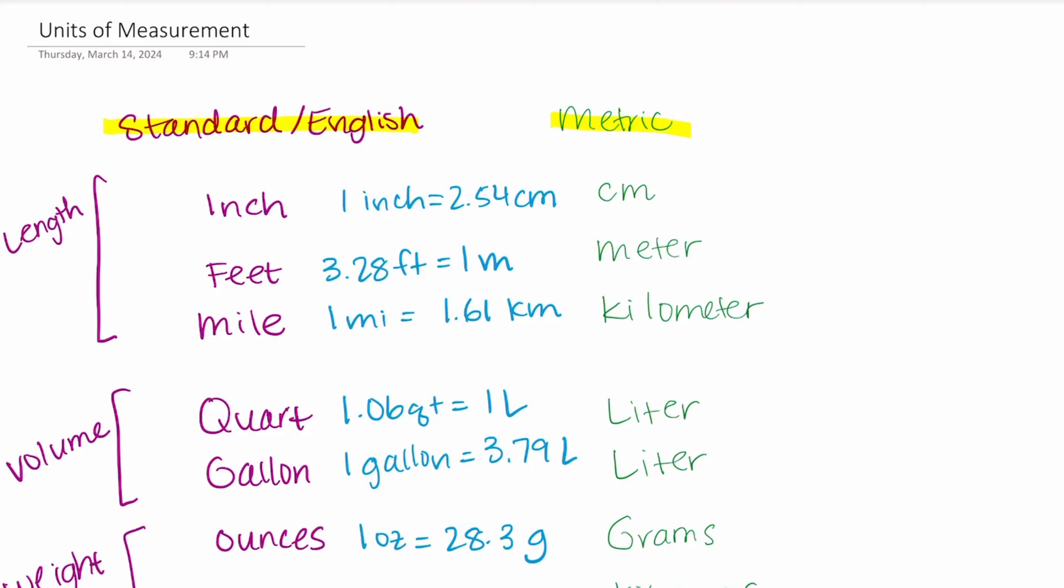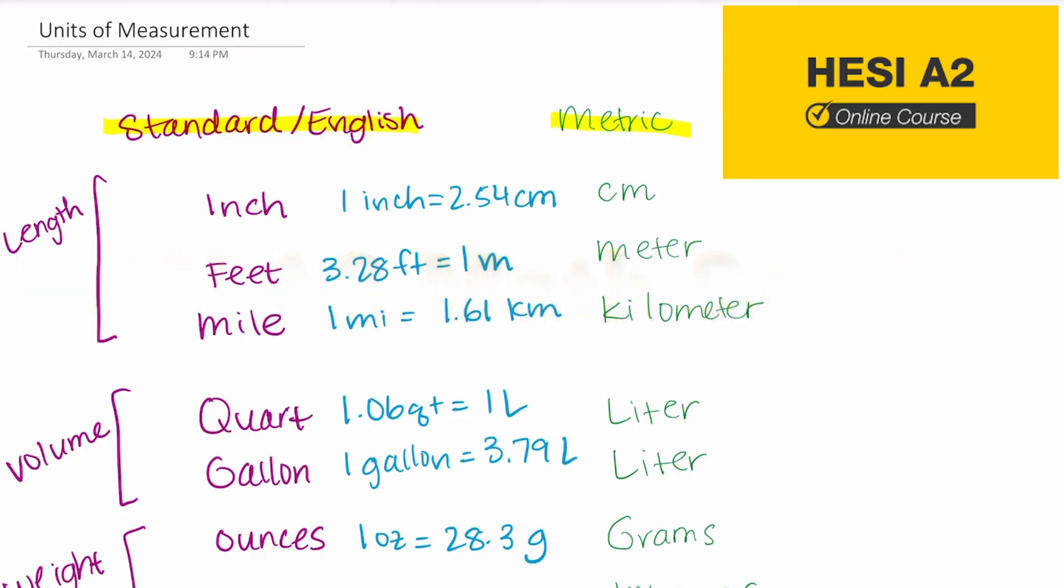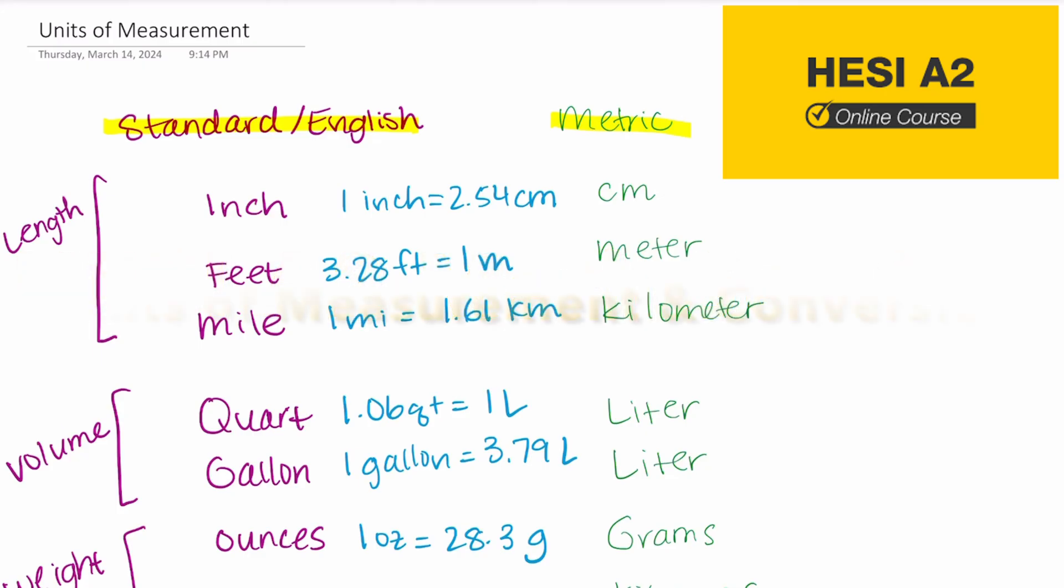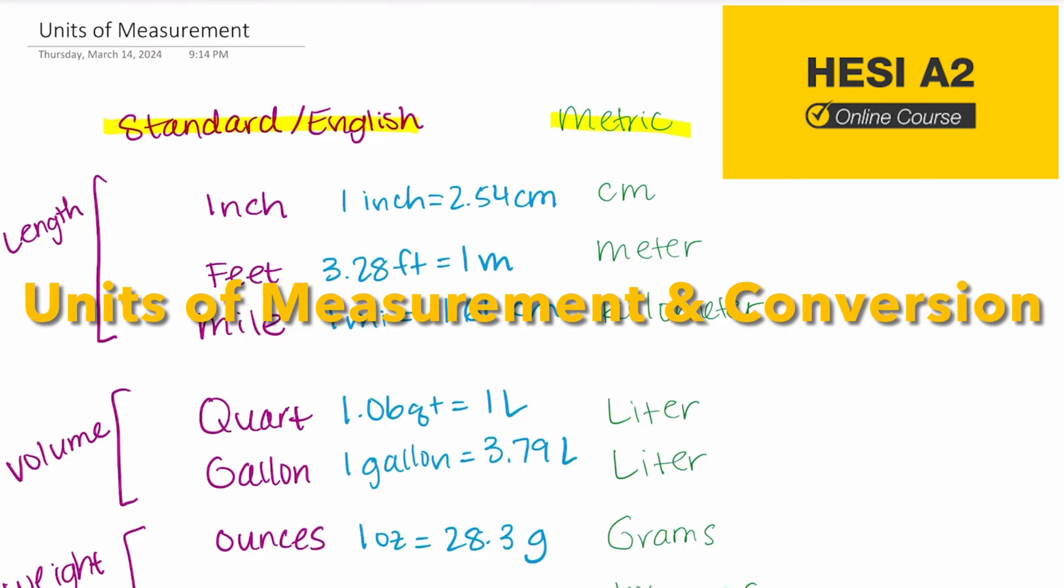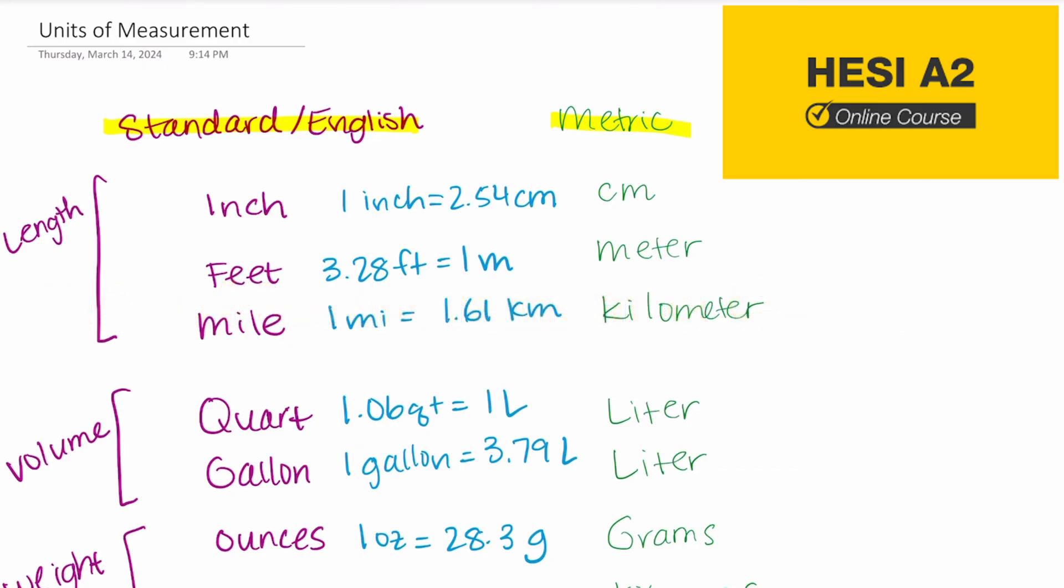Today we're going to be starting a new series specifically focusing on different areas of the HESI A2 exam. We're going to be looking at the math section today and talking about units of measurement and doing conversions where you convert from one unit of measurement into another. For example, if you're asked how many feet are in a thousand inches, then you today will know how to do that conversion very quickly and very easily.